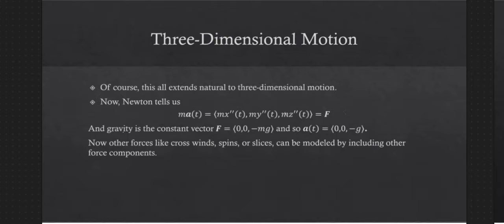If we just have gravity acting on the object in a constant gravitational field, then our acceleration will just look like that. We can go through all the same derivations we did for two-dimensional motion. If we don't have a y component, then just x and z together will look like what we derived previously. But now this offers the possibility of both x and y motion — not just horizontally, but another dimension to our horizontal motion. This also opens the possibility of having other forces, like crosswind spins or slices, that might be accelerating the object in one of the two horizontal directions.